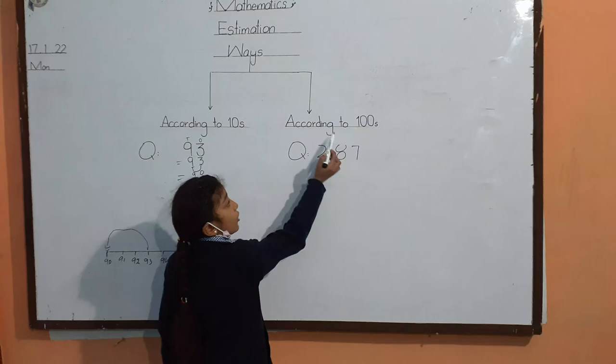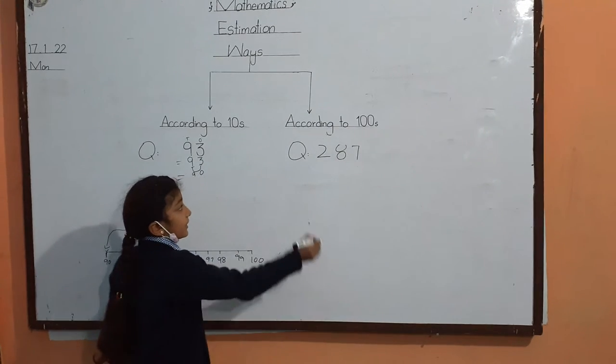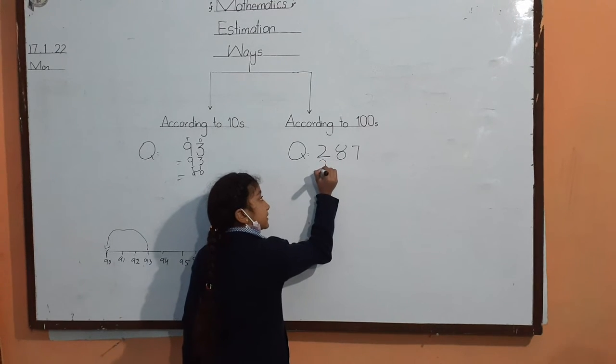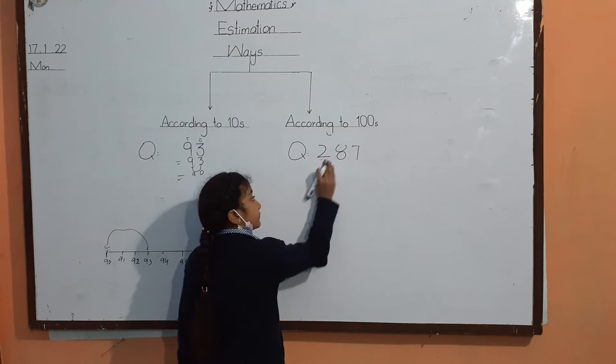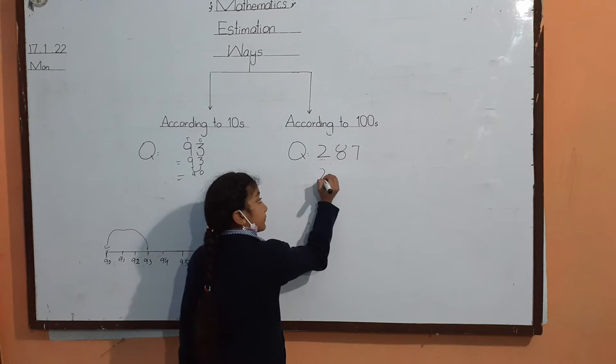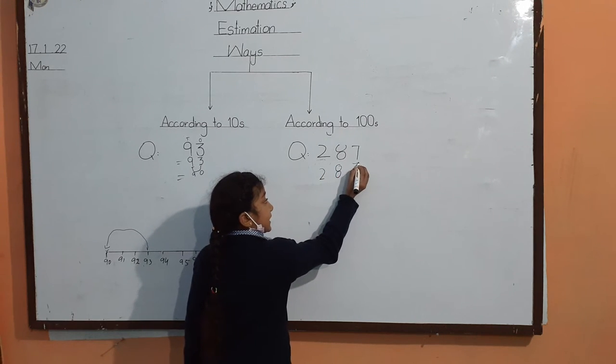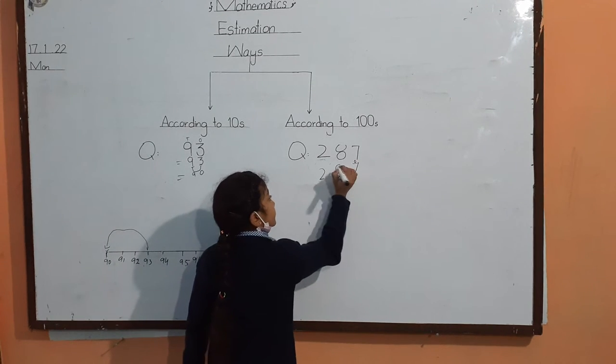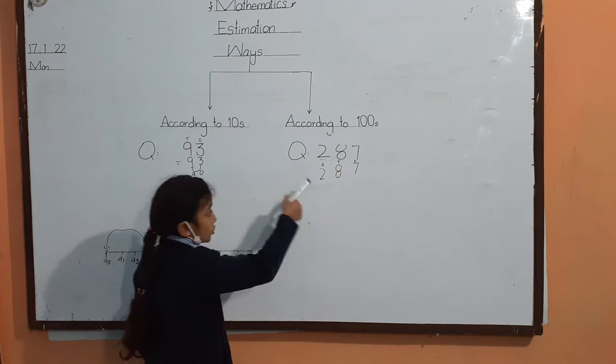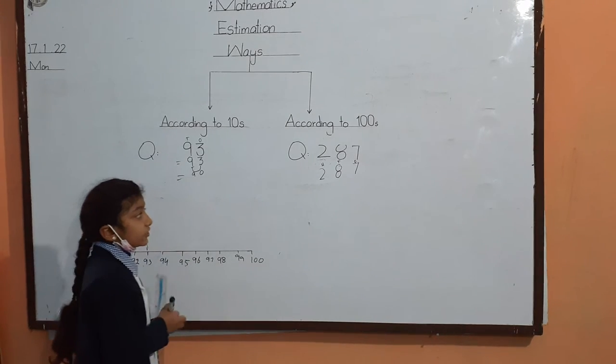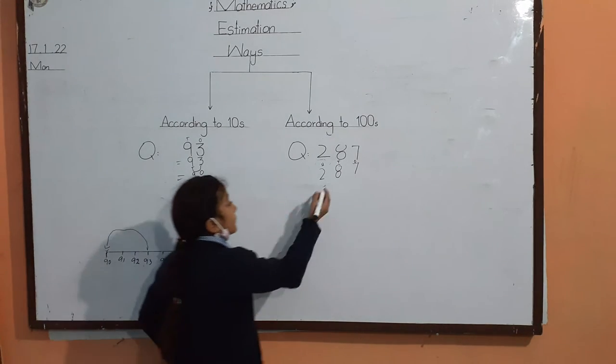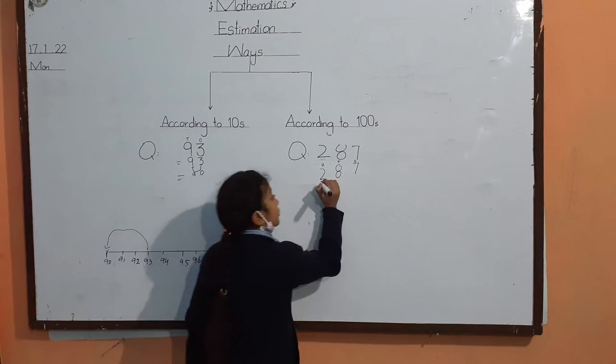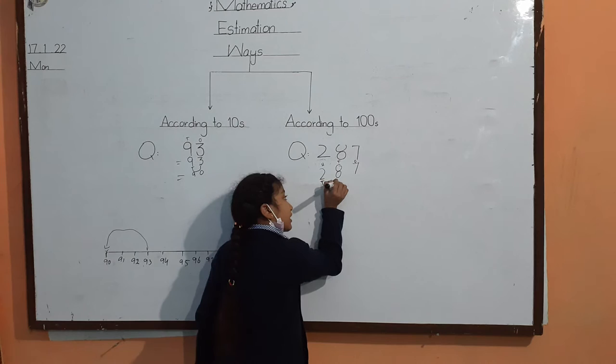Now we will do according to hundreds. First step, we write the question. Second step, we write the place value. The digit in the hundreds place, we will underline it. And the digit in the tens place, we will place an arrow below it.